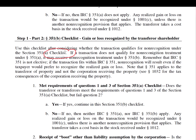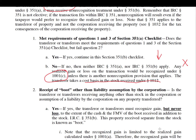The first step of the 351B checklist is: do we meet requirements one and three? If so, we continue. If not, we have to stop — you can't get 351A or 351B, and you must recognize gain or loss on the transaction under Section 1001C. The transferor takes a cost basis in the stock received under Section 1012. If we meet requirements one and three but do not meet the solely in exchange for stock requirement — meaning we do have boot — then we must continue. There are two types of boot to consider.